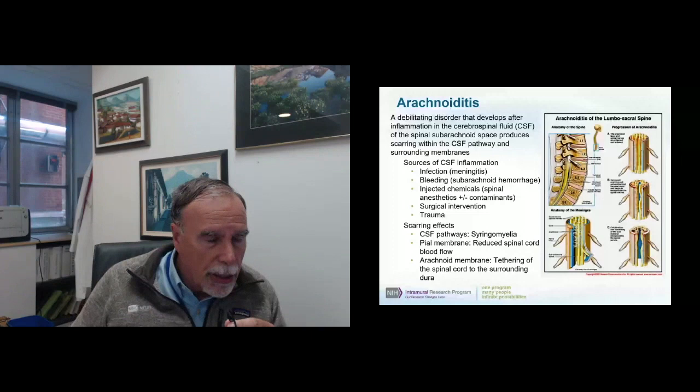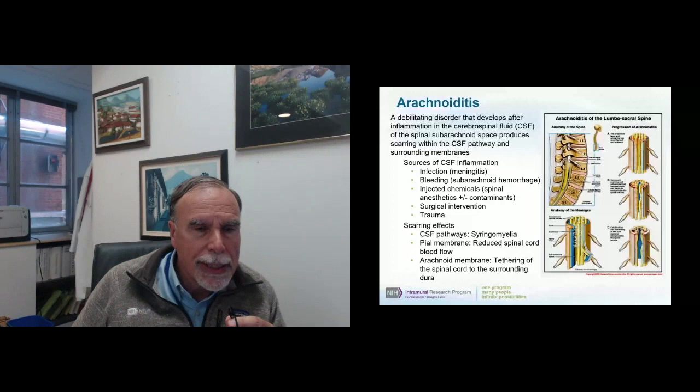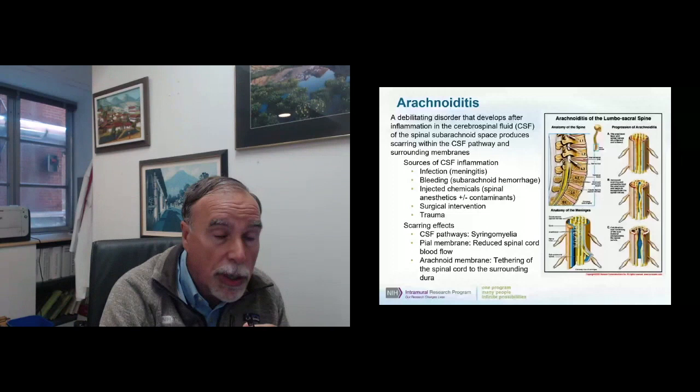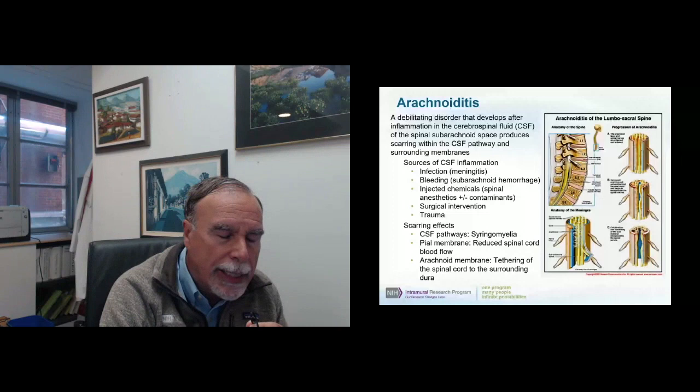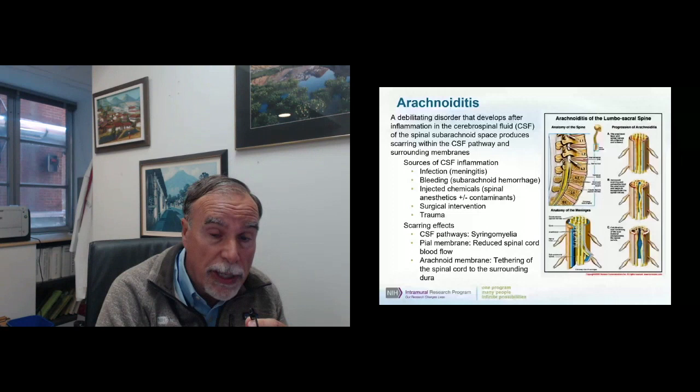There are scarring effects with arachnoiditis, and they can occur either in the CSF pathways — in which case you would develop syringomyelia — or as scarring of the pia membrane on the nerves of the cauda equina or around the entire surface of the spinal cord, or the arachnoid membrane, which is outside the cerebrospinal fluid space and is punctured along with the dura during a spinal puncture.